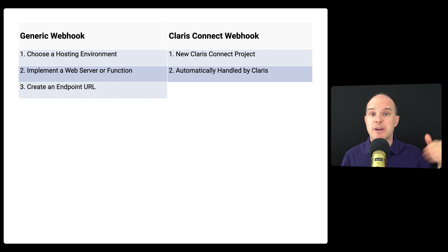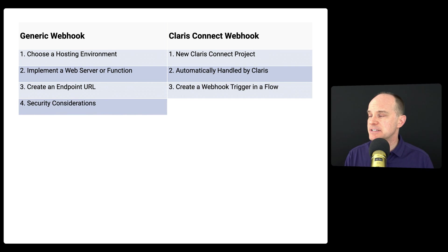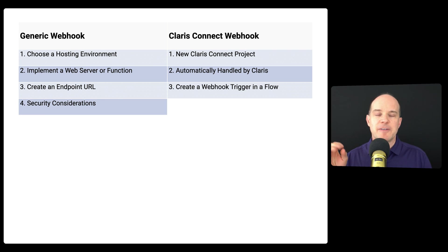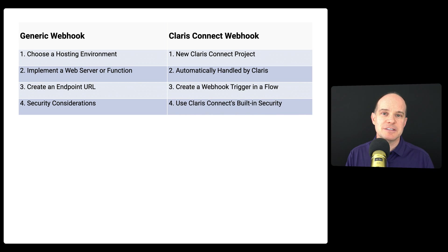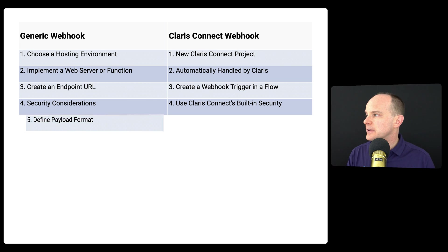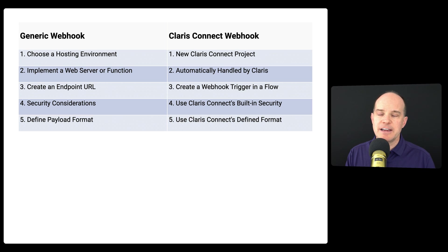Next, you have to create an endpoint URL — the specific path on that server indicating what URL will be used for the webhook. In Claris Connect, that is one click of a button. Then there are security considerations: SSL certificates, dedicated domains, locking the server down, protecting it from viruses, malware, firewall, dedicated IPs, whitelisted IPs — miles and miles of security considerations when you set up your own web server. With Claris Connect, the built-in security is completely done for you. You also have to define the payload format — XML or JSON. With Claris Connect, it's JSON, defined and ready to go.